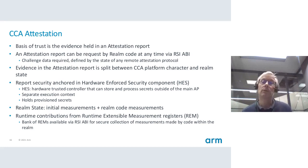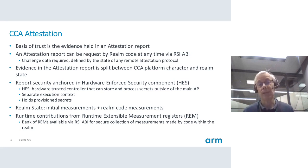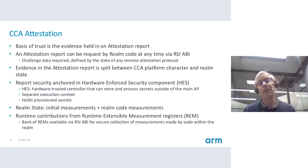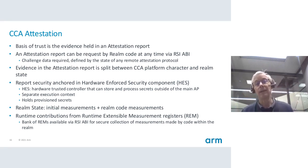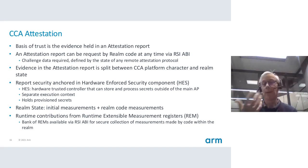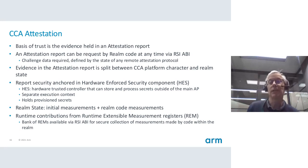As the realm executes and boots, as new software comes in, measurements are available in what we call the Runtime Extensible Measurement Registers — available via an ABI. Semantically, think of them like a PCR from that point of view. This enables the actual workload within the realm to measure itself and express itself, and this information is inside the attestation report.